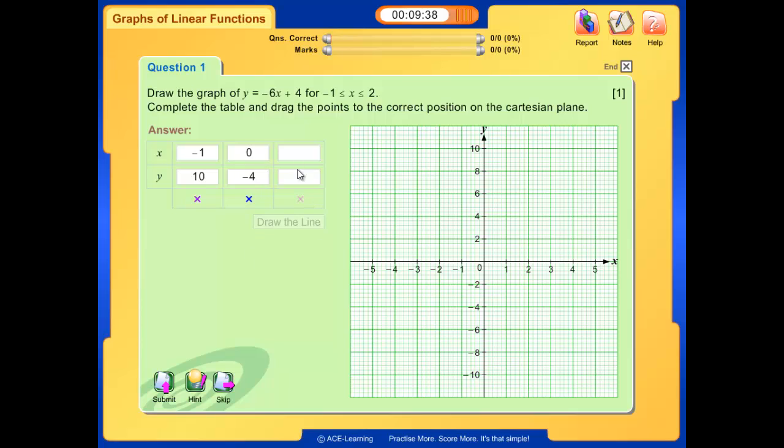Now let's keep the X values within the given range. Calculate the Y values. As each Y value is keyed in, a small cross appears. Ah, notice that there is a mistake made. We'll see how the system prompts the students later. Let's position the points first.